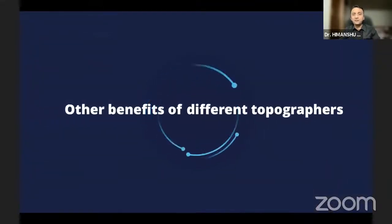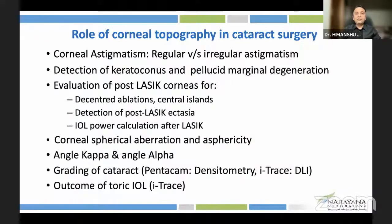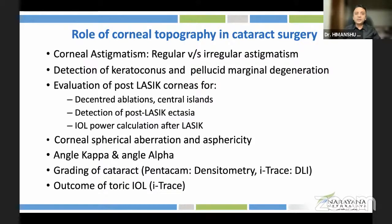There are certain other benefits of such topographers for the cataract surgeon: they tell you about regular versus irregular astigmatism, help detect keratoconus and pellucid marginal degeneration, help with IOL power calculation in post-LASIK patients, and can also tell you about spherical aberration or asphericity of the cornea, as well as angle kappa and angle alpha.